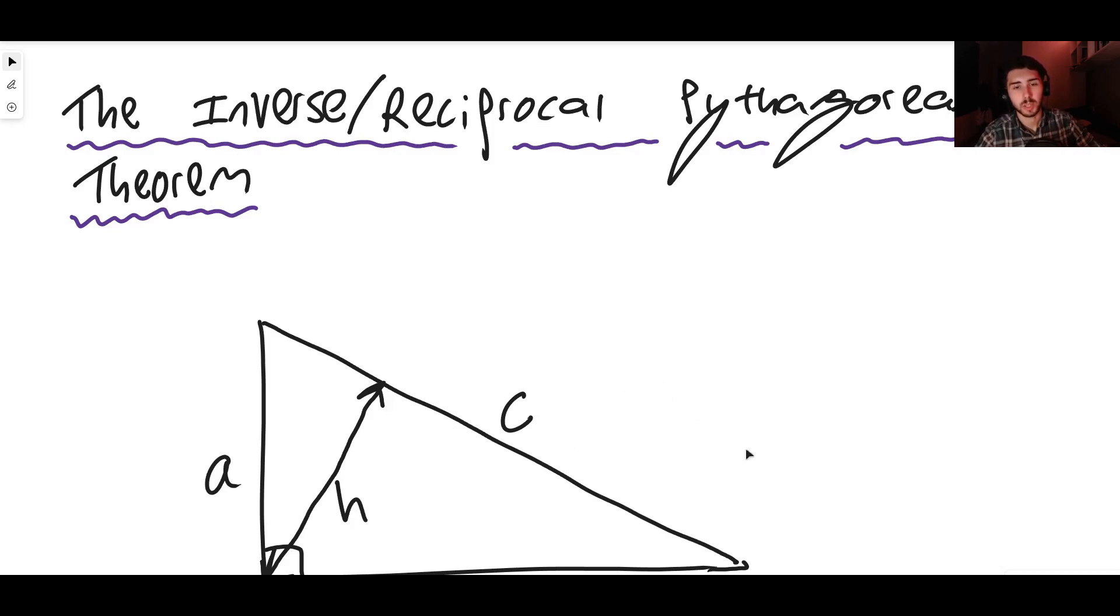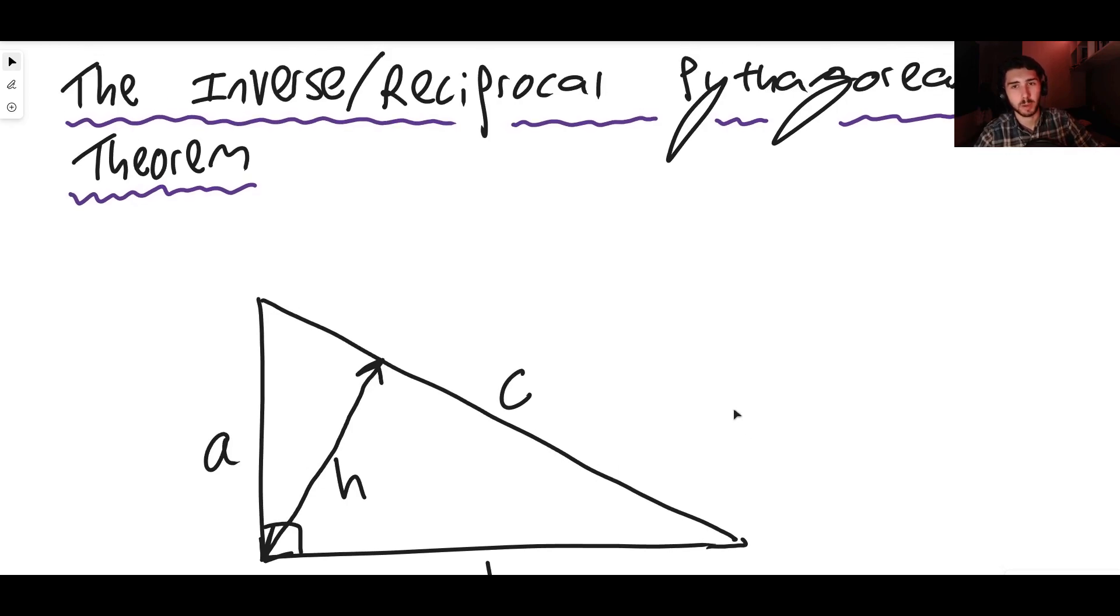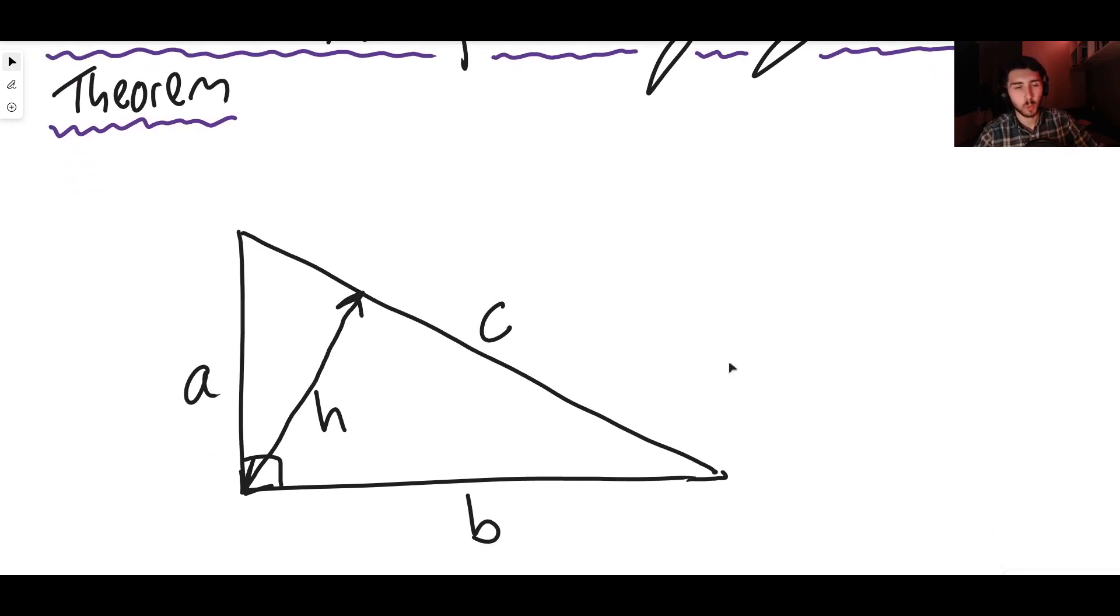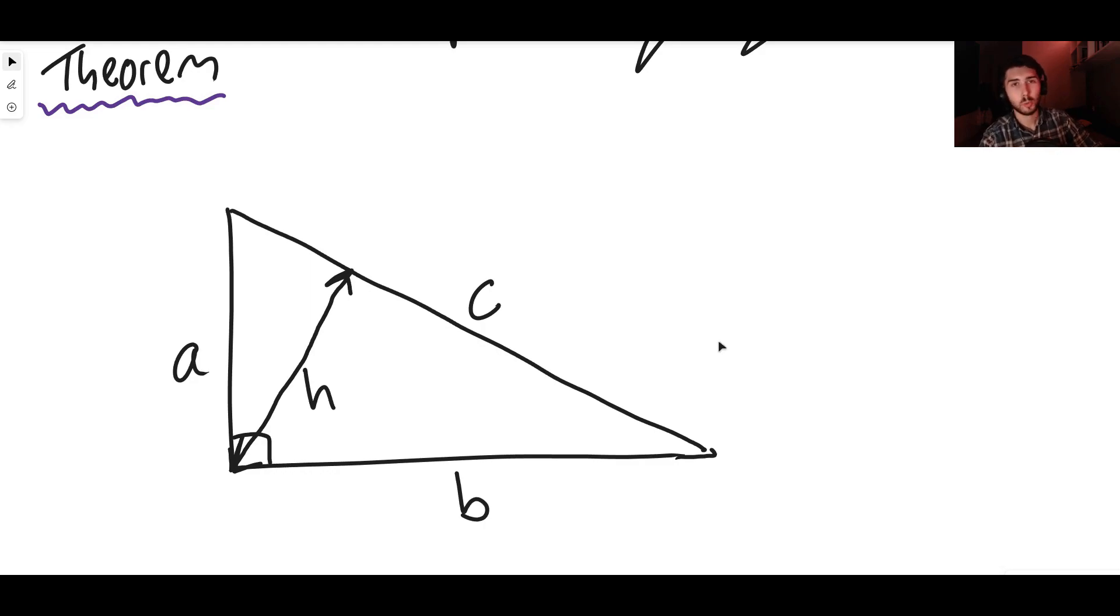What does it say? Well, if we consider a normal Pythagorean right angle triangle, we all know it, we all love it. We know a squared plus b squared equals c squared—that's Pythagoras' theorem.